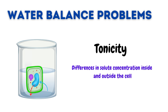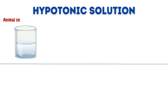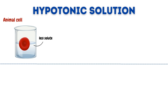I will discuss both plant and animal cells. When an animal cell, for example a red blood cell, is placed in a hypotonic solution, where the solute concentration is lower outside the cell compared to inside, water enters into the cell by osmosis. This movement of water creates a gradient with water molecules moving from an area of higher to an area of lower concentration.